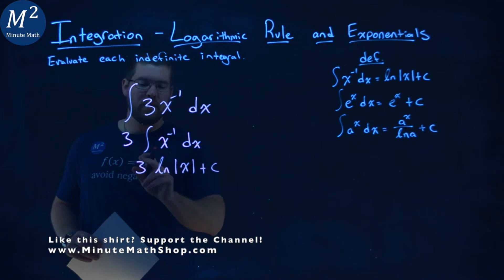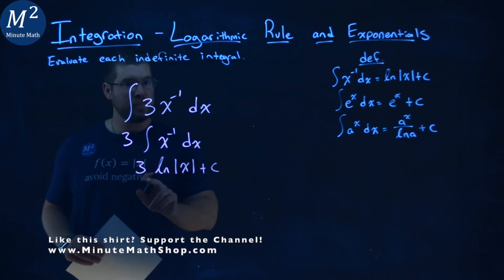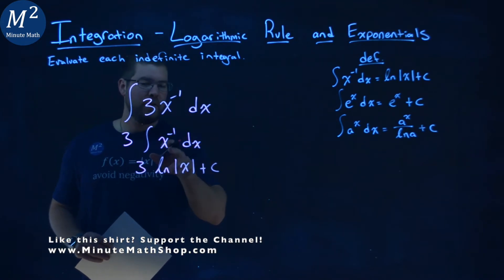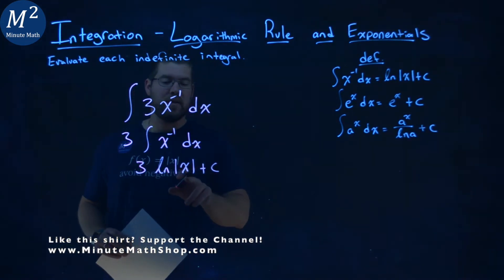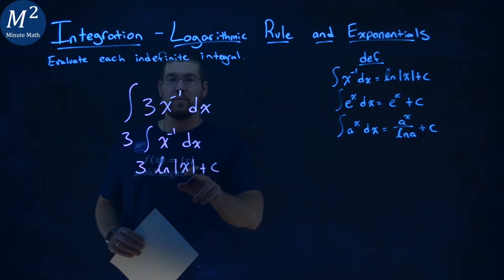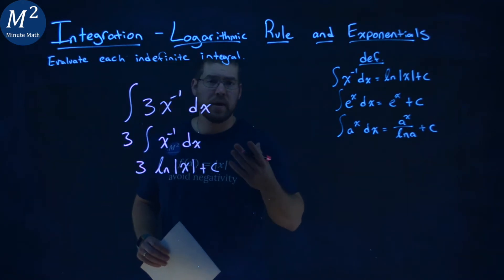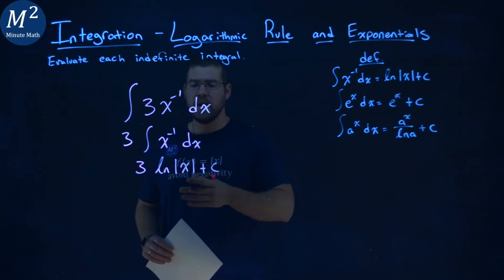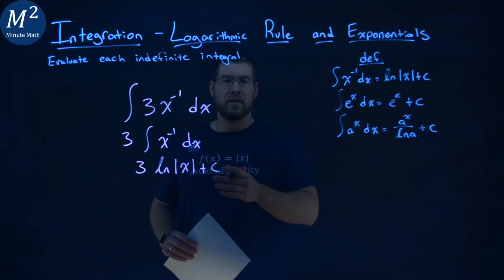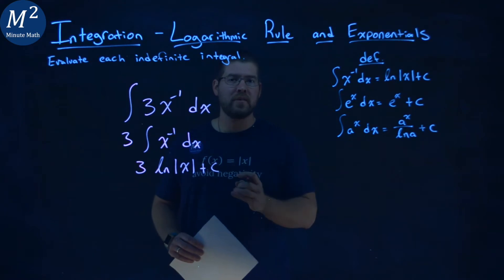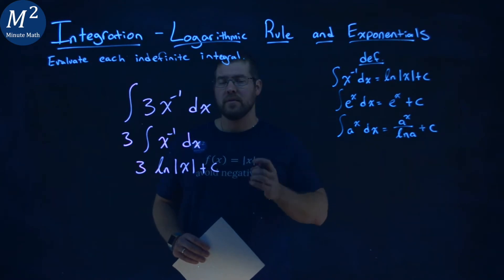That 3 just comes down, and then our integral of x to the negative 1 power is the natural log of the absolute value of x plus c. So our final answer is 3 times the natural log of the absolute value of x plus c.